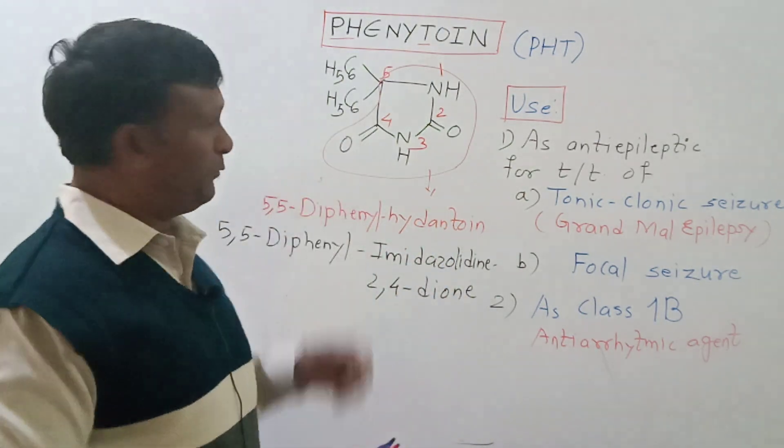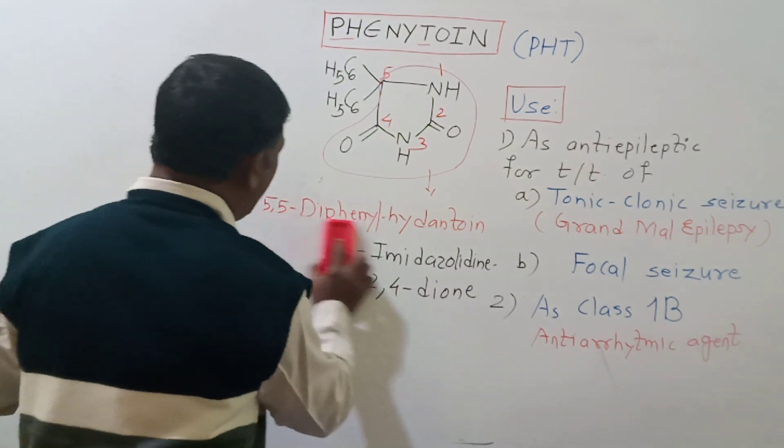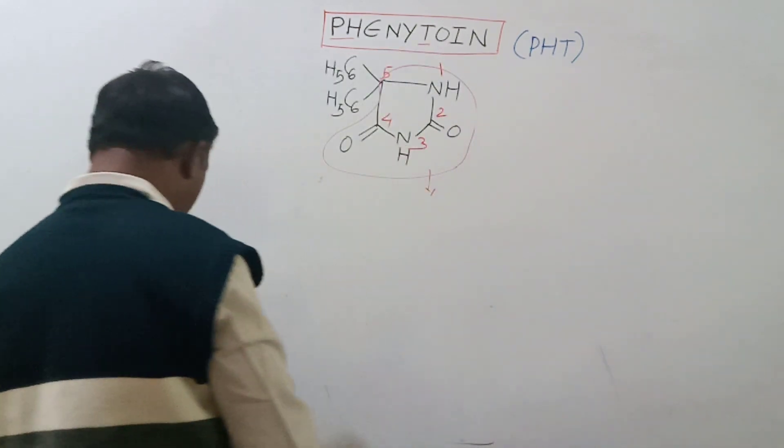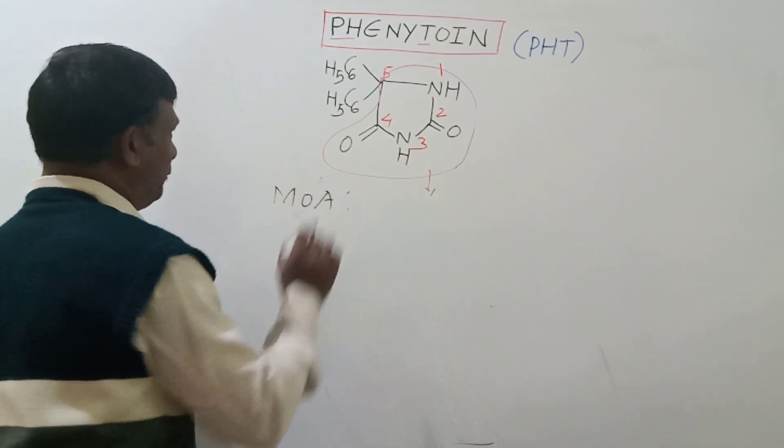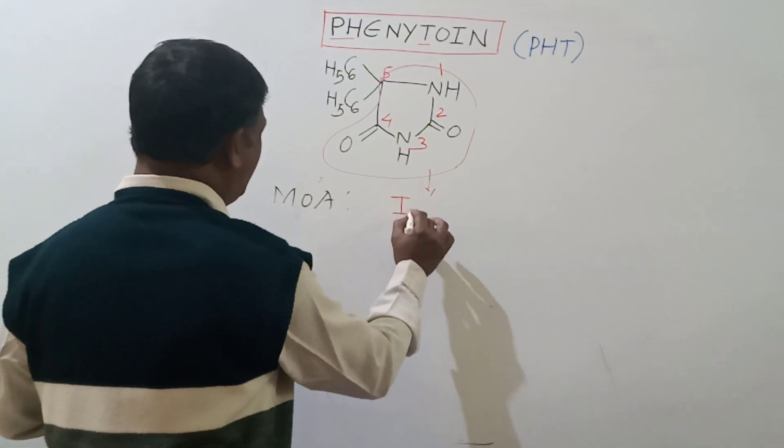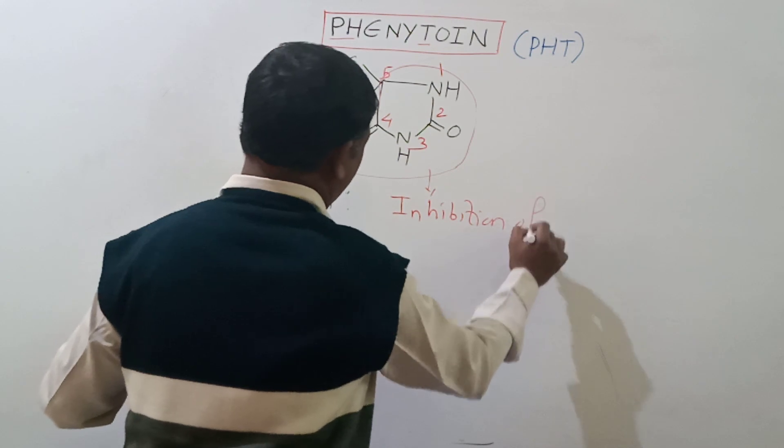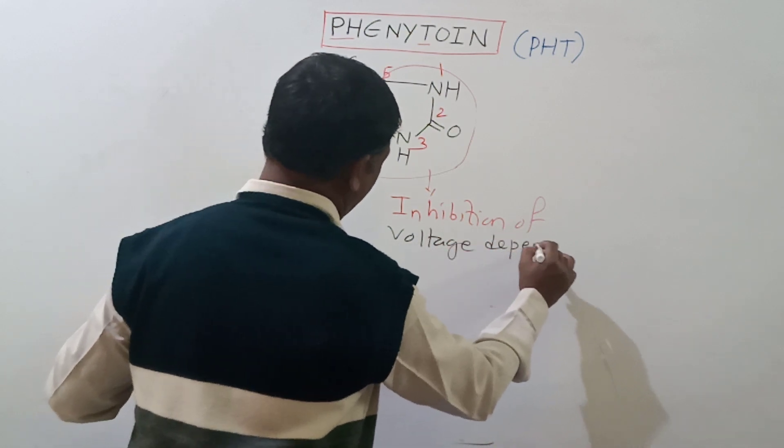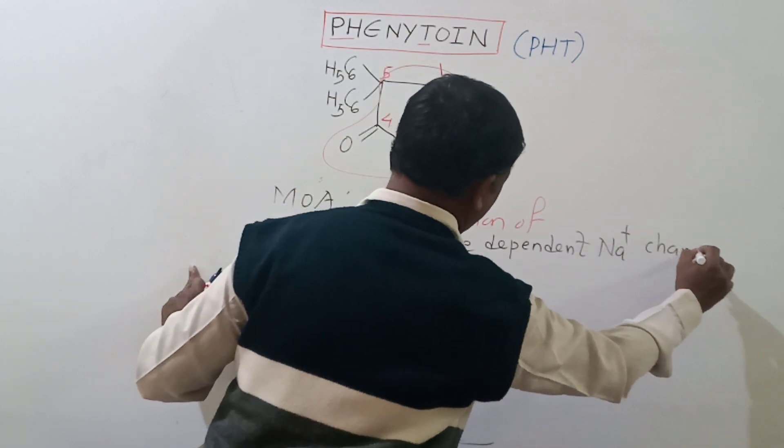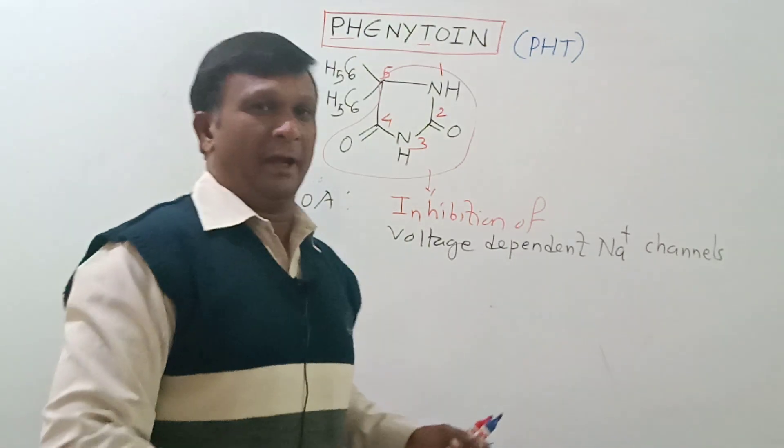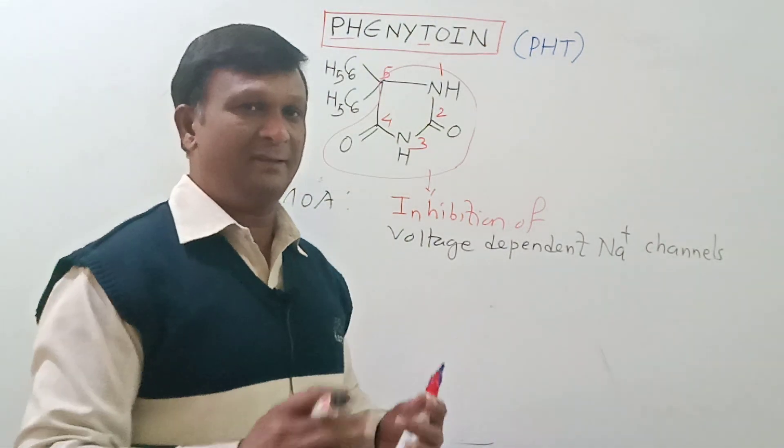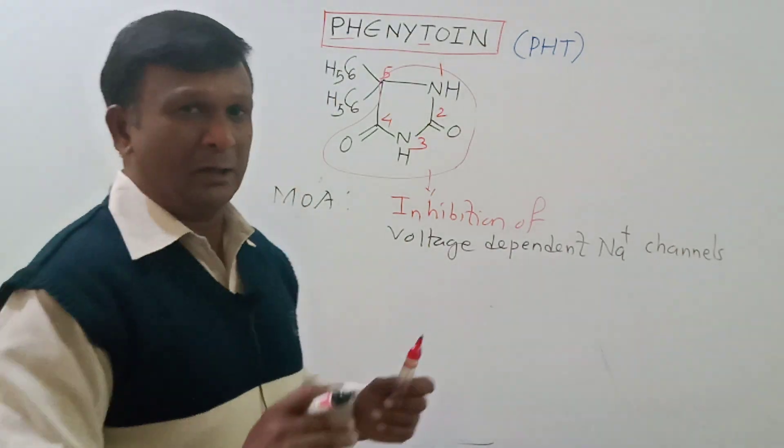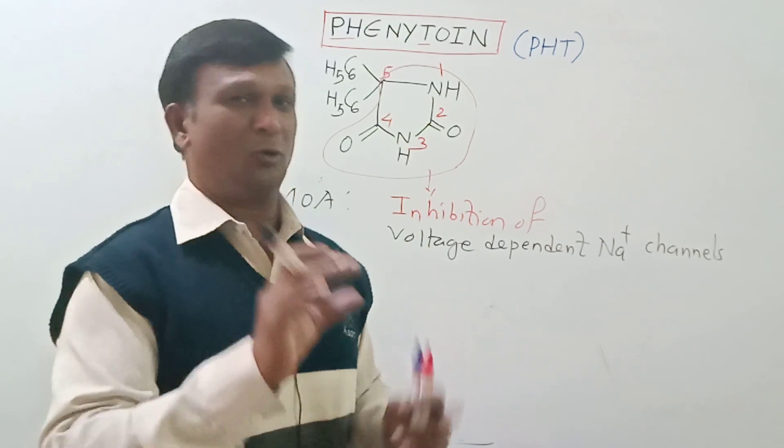Both names can be the IUPAC names for phenytoin. Next we move on to the mechanism of action of this compound, which is very important in view of the examination. The mechanism of action includes inhibition of voltage-dependent sodium channels. In case of epilepsy there is excessive firing of the neurons due to excessive entry of sodium ions.